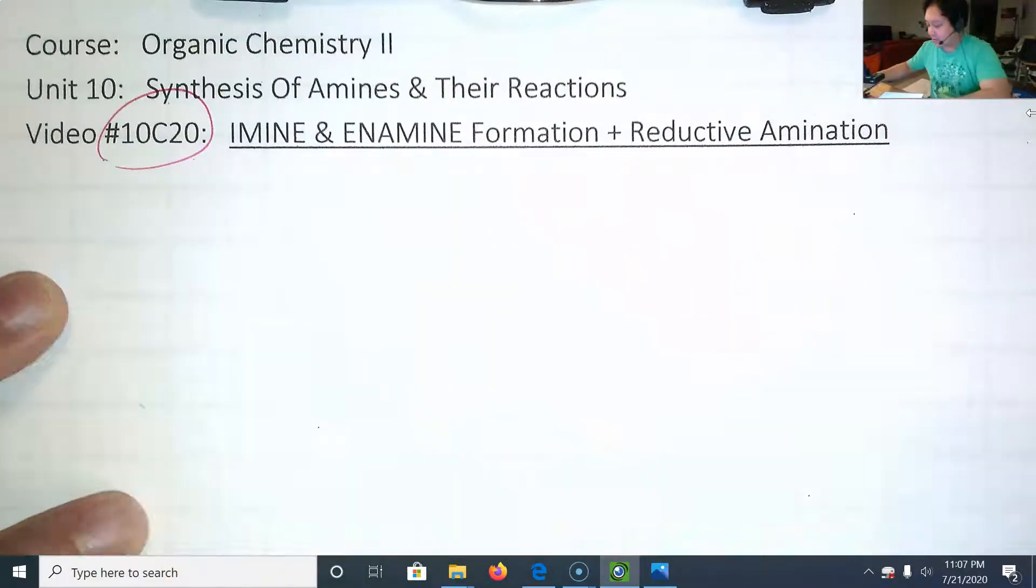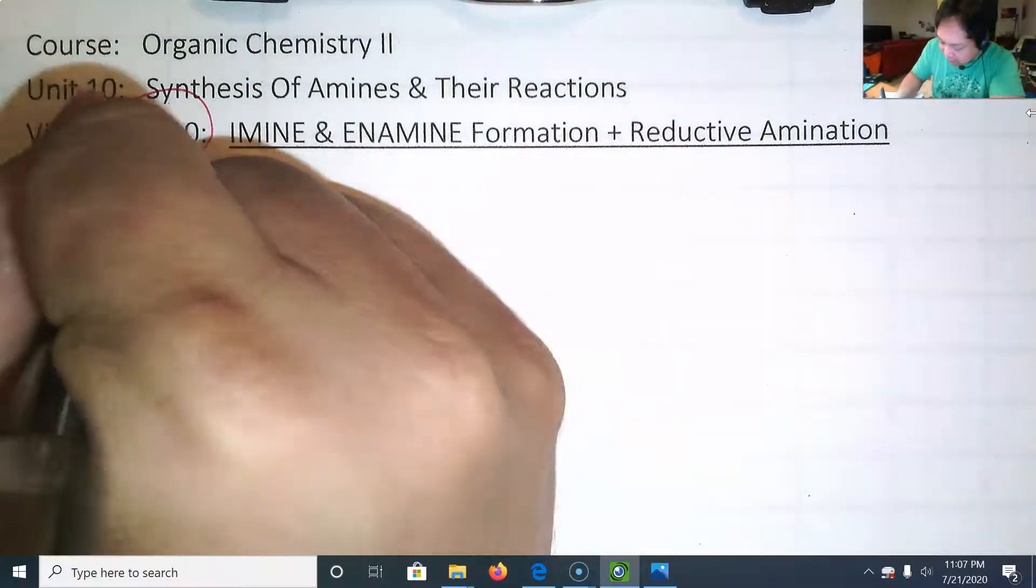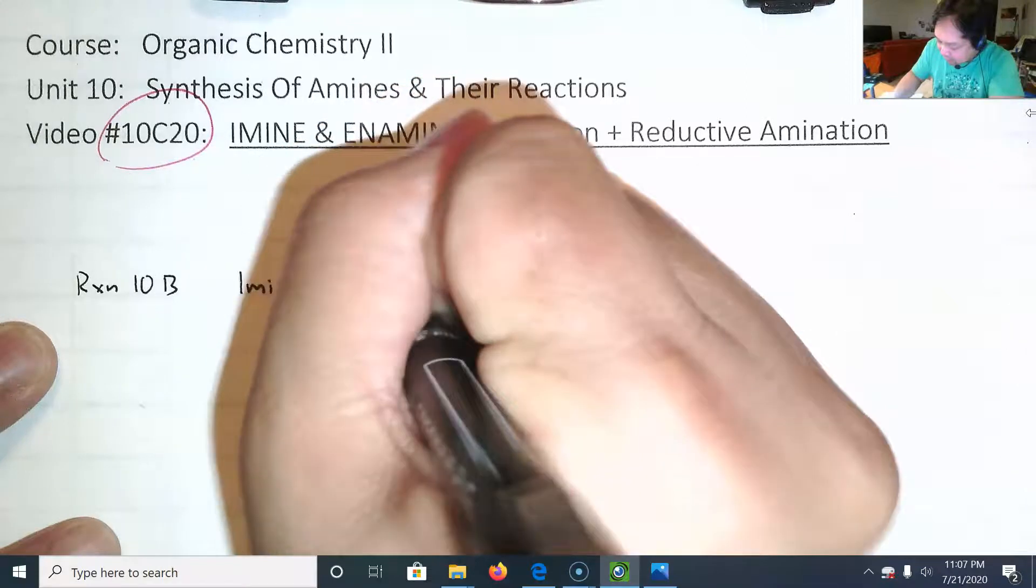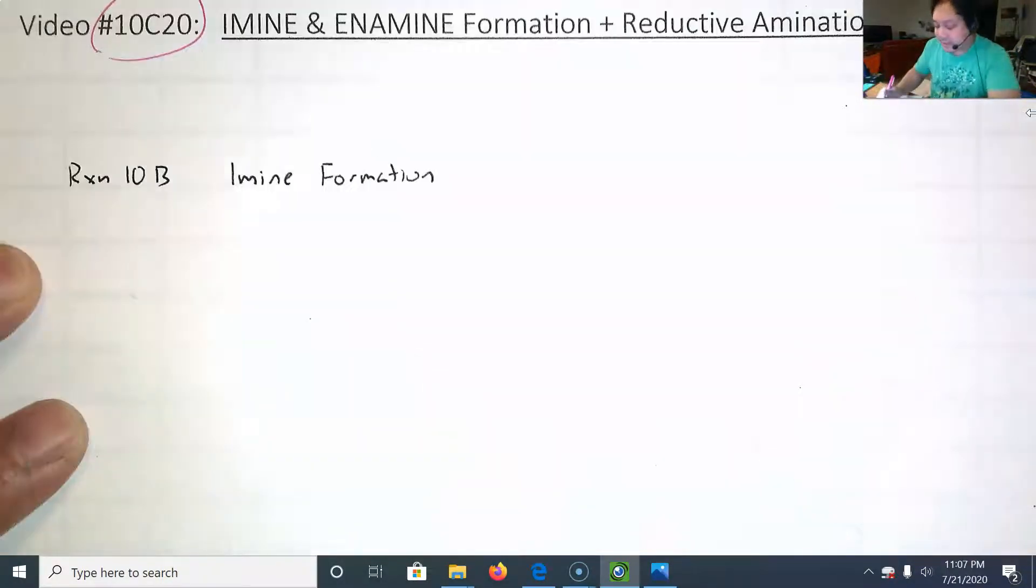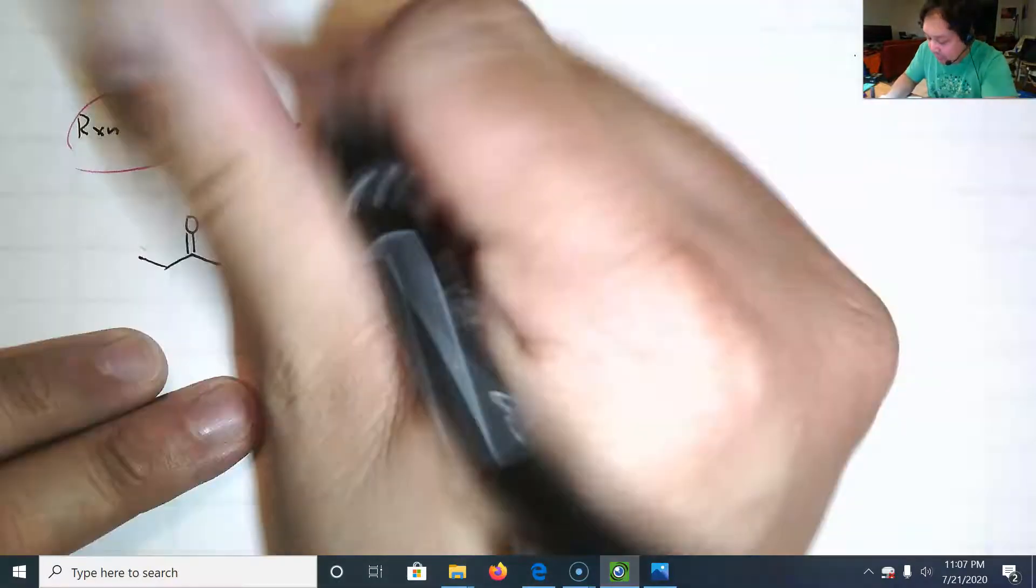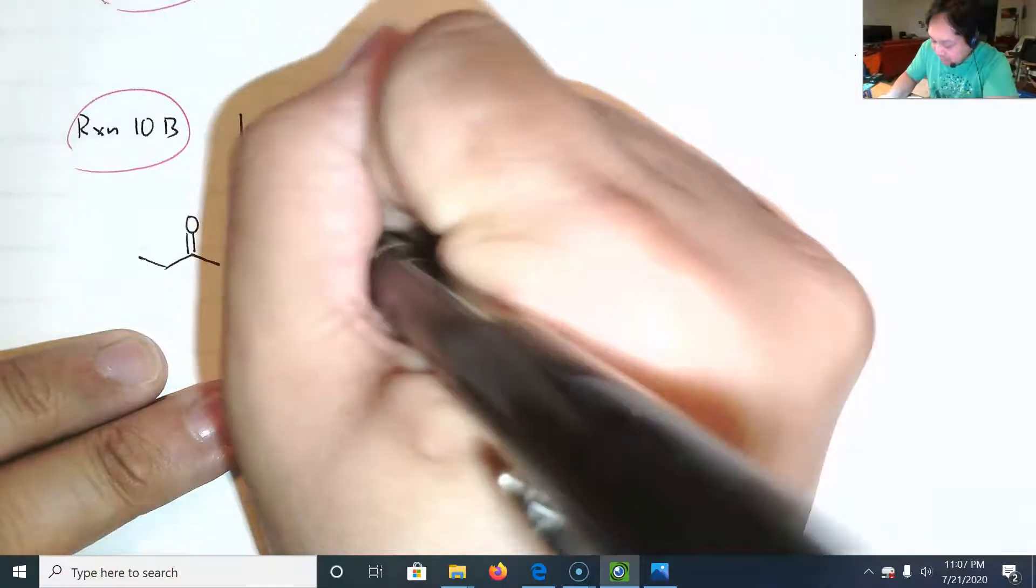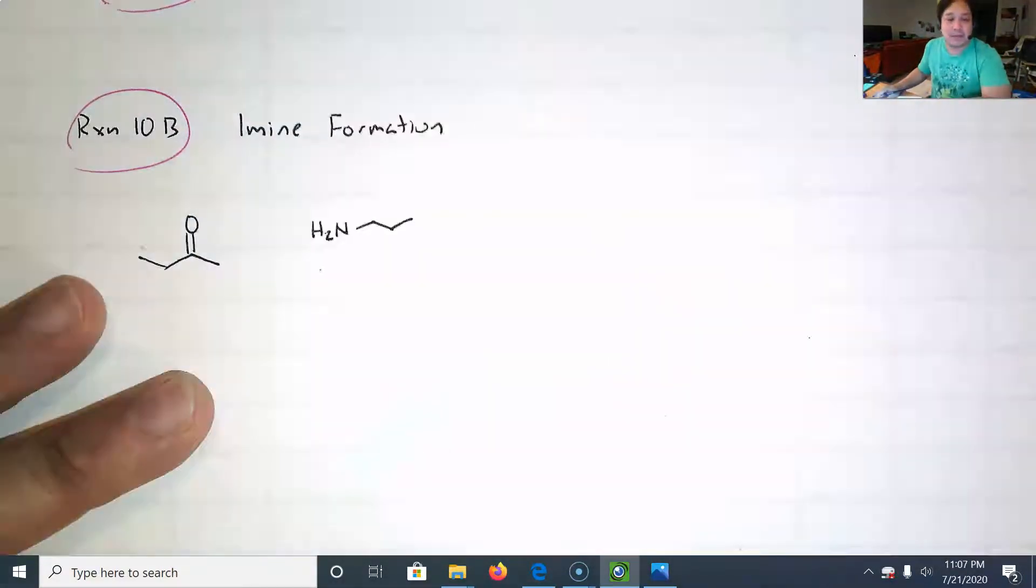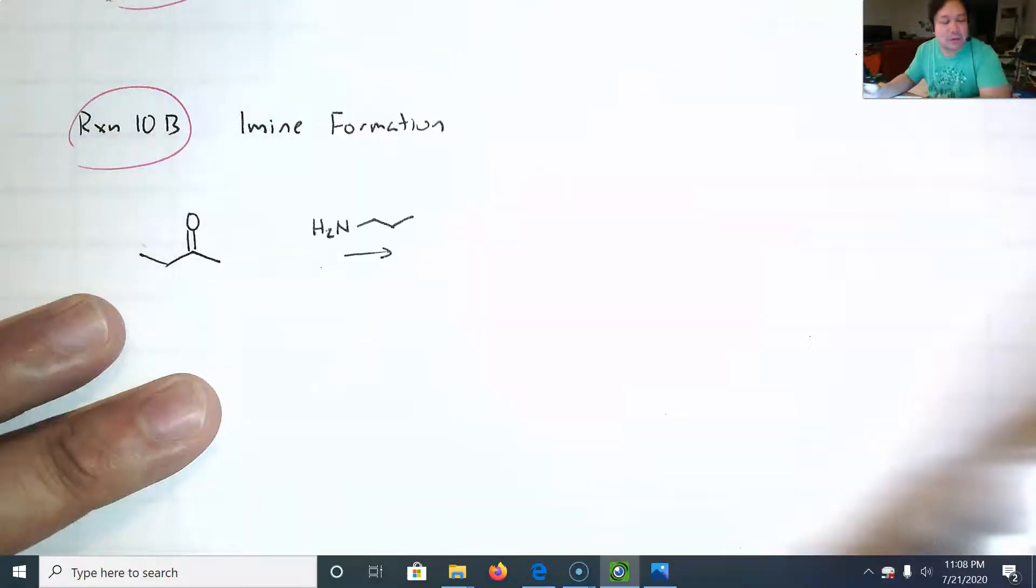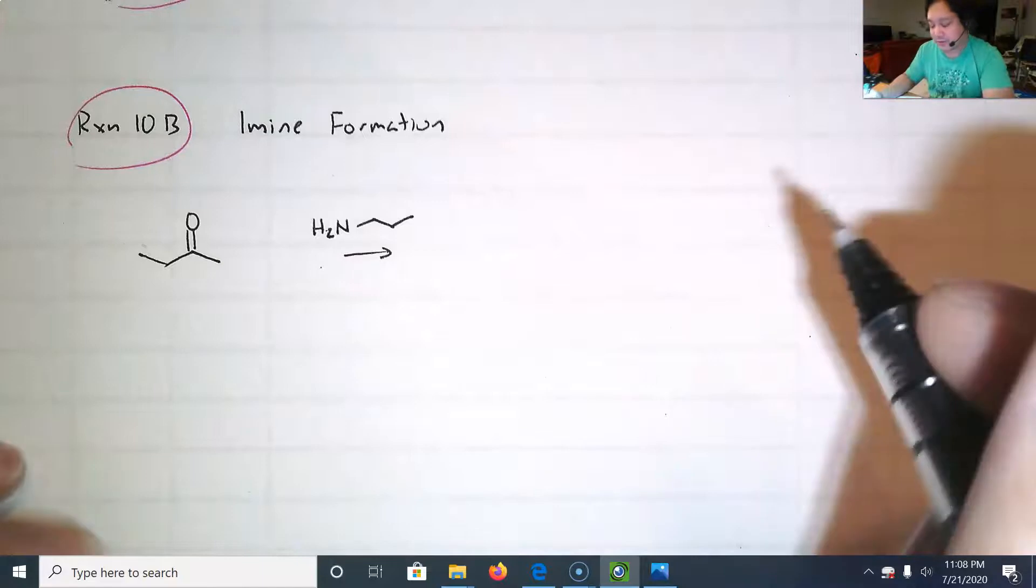This is video 10C20, and we are on reaction 10B, imine formation. In many textbooks, this reaction is put in the aldehyde and ketone chapter, but I like to save it for the amine unit. What happens in this reaction is that you have a ketone or aldehyde, and you're going to combine it with a primary amine, H2N, for instance. I'll make it propylamine or 1-propanamine.